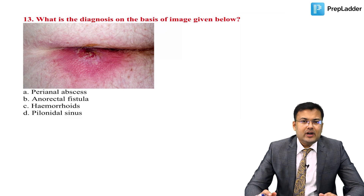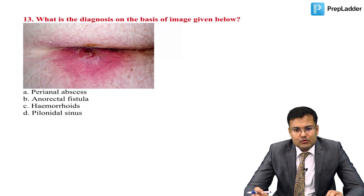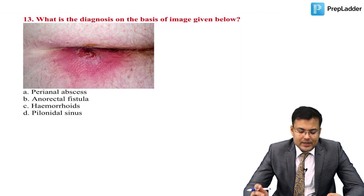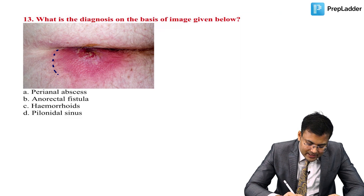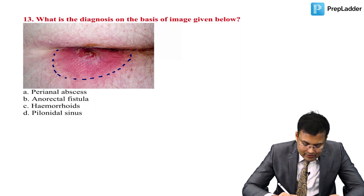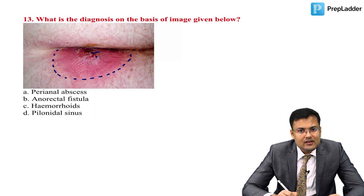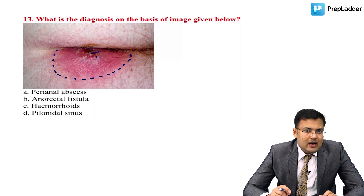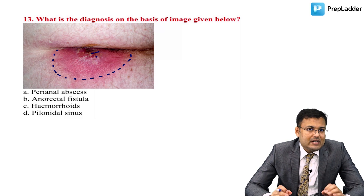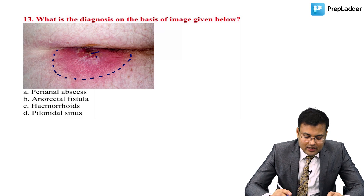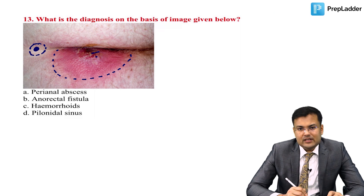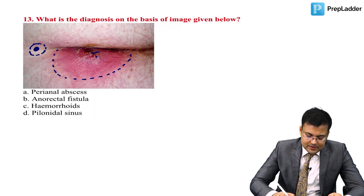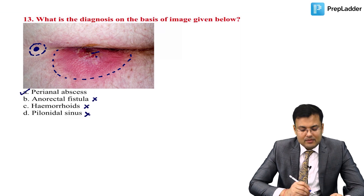Next question: diagnosis based on image in the perianal region — erythematous swelling with pus points, indicating tenderness and likely fever with chills and rigors. This is a clear case of perianal abscess. The cause: infection from the crypts of Morgagni reaches the anal gland, forming pus that follows the path of least resistance and collects around the anal canal.